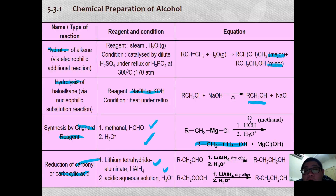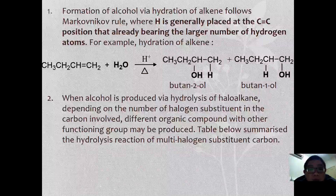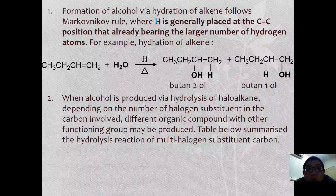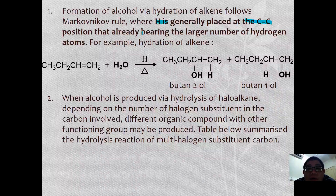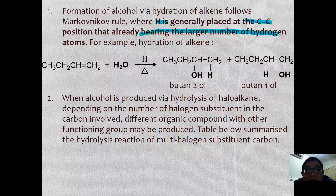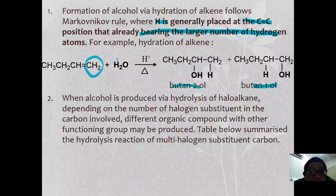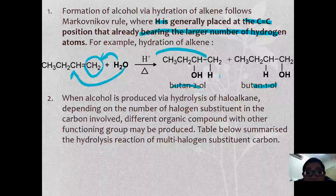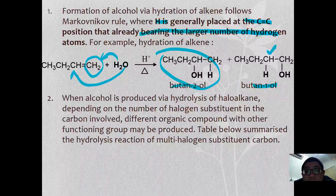The hydration of alkene to form alcohol follows Markovnikov's rule, where hydrogen is generally added to the carbon already bearing the larger number of hydrogen atoms. For example, if but-1-ene is hydrated, you form butan-2-ol as the major product and butan-1-ol as the minor product, since the OH attaches to the carbon with fewer hydrogens.